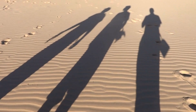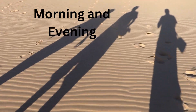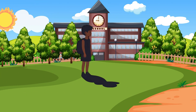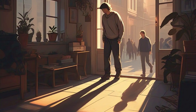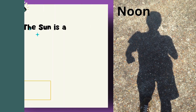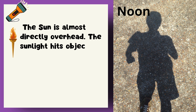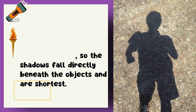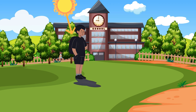Shadows are longer in the morning and evening and shorter at noon because of the angle of the sun in the sky. In the morning and evening, the sun is low on the horizon, so its rays hit objects at a slanting angle, causing shadows to stretch out and making them longer. At noon, the sun is almost directly overhead at its highest point in the sky, so sunlight hits objects more vertically, and shadows fall directly beneath the objects and are shortest.